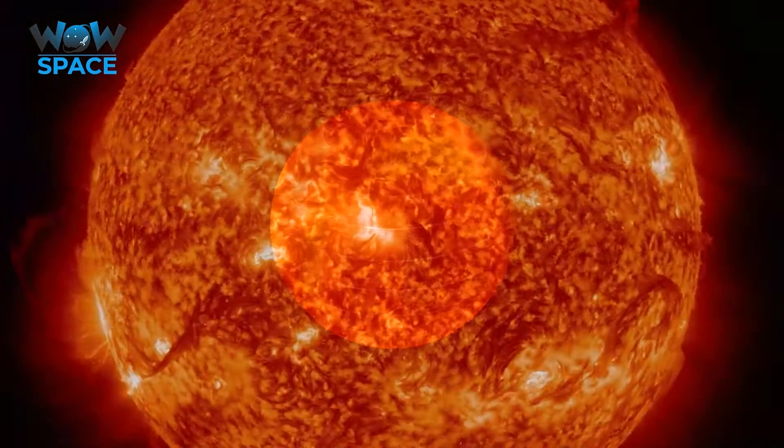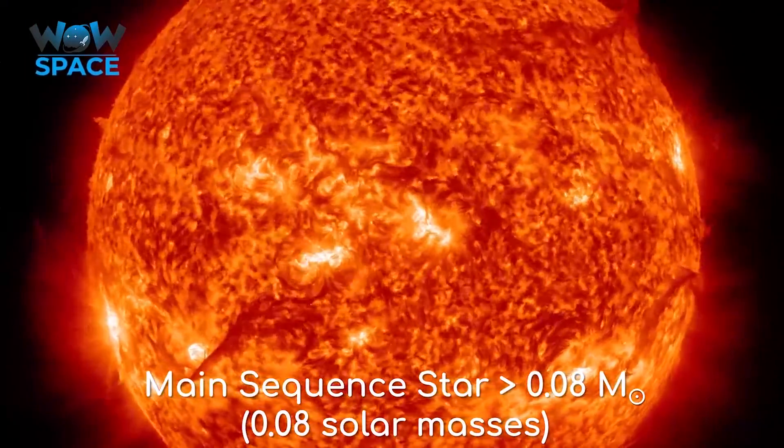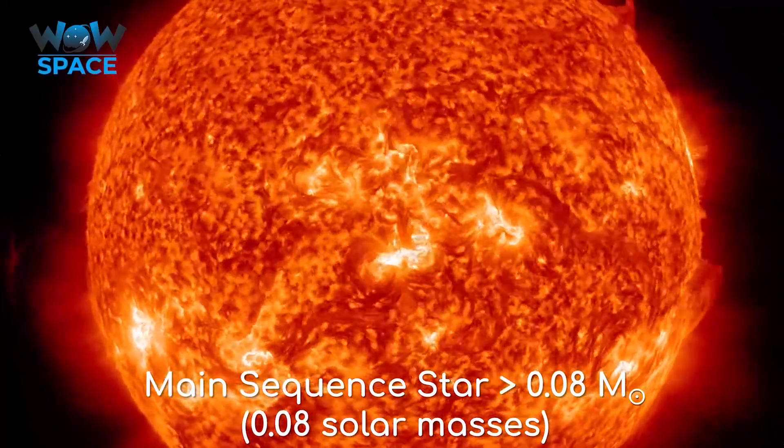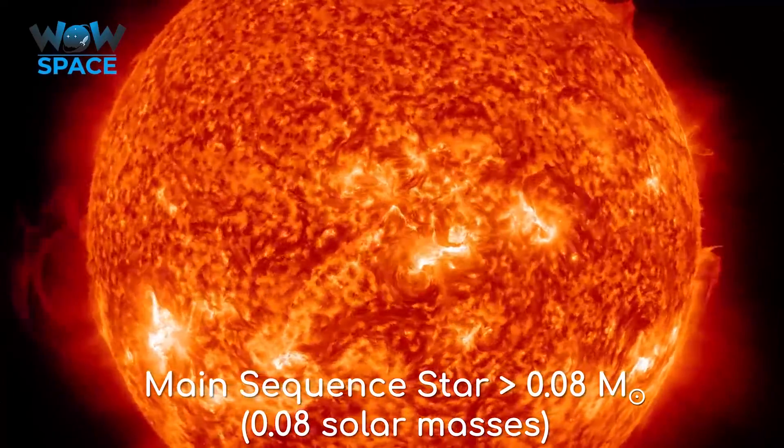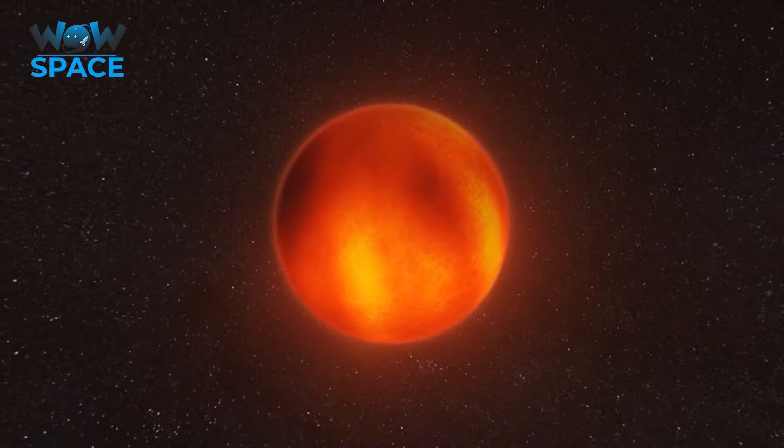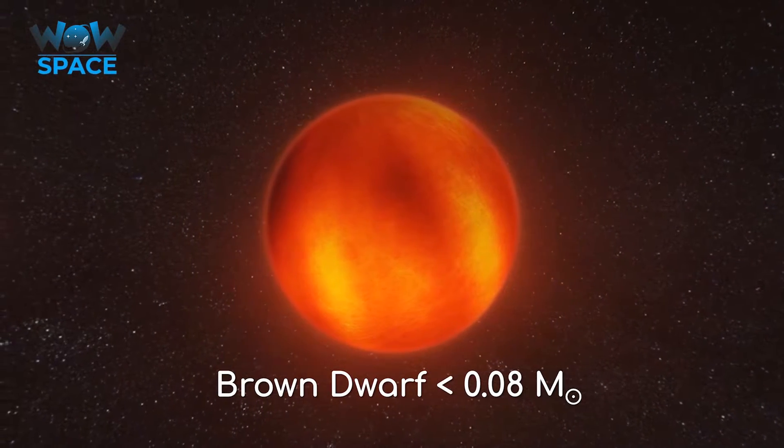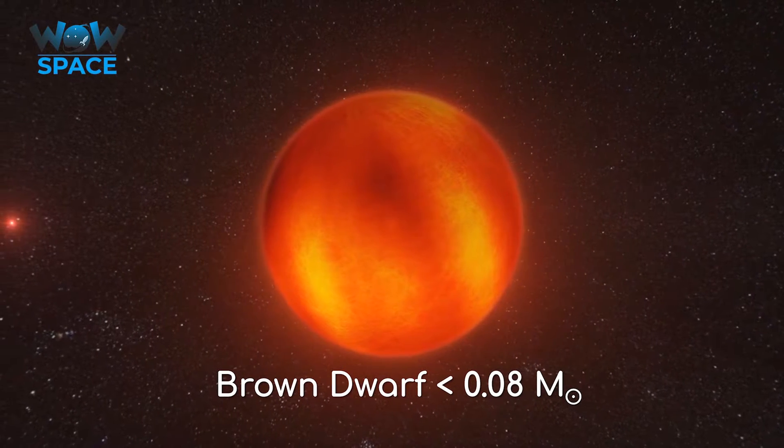In order for a star to be a star, it has to be over a certain mass, namely 0.08 solar masses, or 8% of our Sun's mass. Below this threshold, the object is classified as a brown dwarf, because it didn't become massive enough for nuclear fusion to take place in its core.